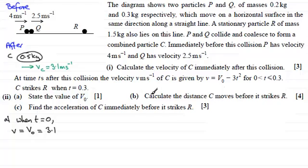Now in part b, we've got to calculate the distance that C moves before it strikes R. And to do this, we should be familiar with the fact that if you're trying to work out a distance when you're given a velocity as a function of time, then that distance is equal to the integral of the velocity with respect to time. And for this problem, the time is going from 0 to 0.3 when it hits R.